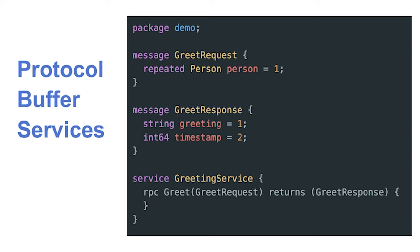Protocol buffers are not just a format — they also define the functions of a service as well as the messages that go across. There are two parts: the first is just the serialization format — the message and object types. The second is defining RPC endpoints. And they work very well together.